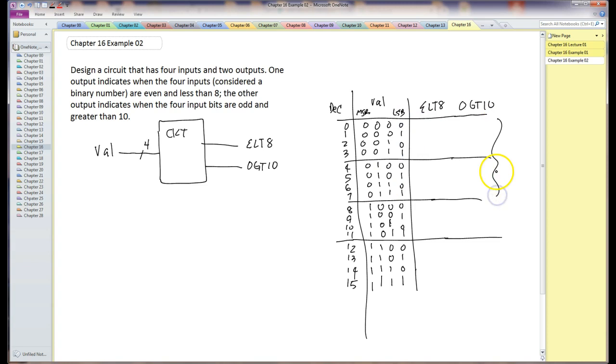This part is less than 8, and what I have to do is mark when it's even. There's a 2. We're going to consider 0 to be even. 2, 4, 6, and I'm done with that. Anything that's not a 1 is a 0.